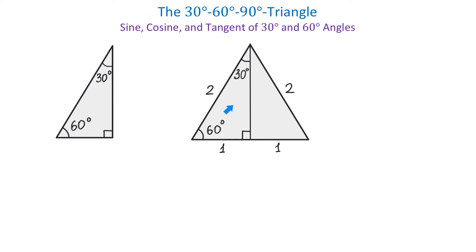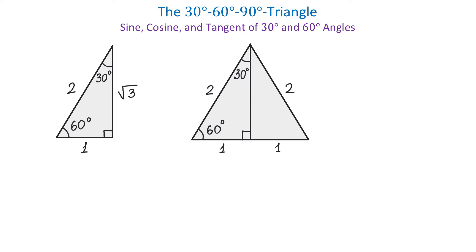This is exactly the triangle that we have to the left. In this triangle, we can say that if the shortest side is 1, then the hypotenuse will be 2. Now let's use the Pythagorean theorem to find the missing side. We will take the square root of the hypotenuse squared minus the other side squared. Then 2 squared is 4, and 4 minus 1 is 3, so we get the square root of 3.